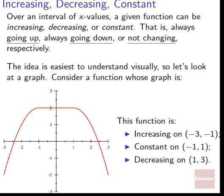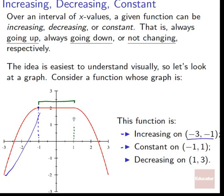Consider a function whose graph increases from negative three to negative one — it's going up but stops around negative one. It's probably increasing before negative three, but since we only see this viewing window, we can only guarantee the interval negative three to negative one is increasing. Then it's constant on negative one to one — it doesn't change at all. However, it is decreasing after one, so decreasing on one to three, since we can only be sure up until three.